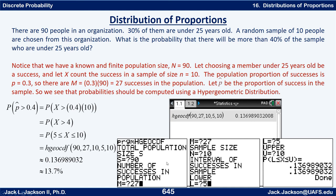On the TI-84, you run the HGOCDF program under the program menu. On the TI-Nspire, the program is not built in but can be entered — refer to an earlier video if needed. You input population size 90, number of successes in population 27, sample size 10, lower x of 5, and upper x of 10. The result is again about 13.7 percent.